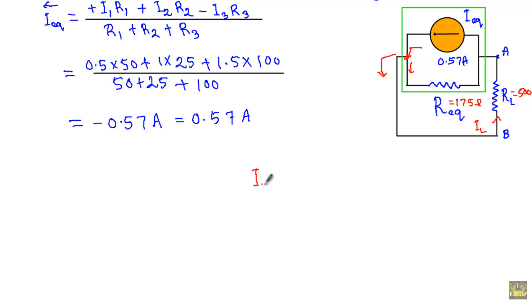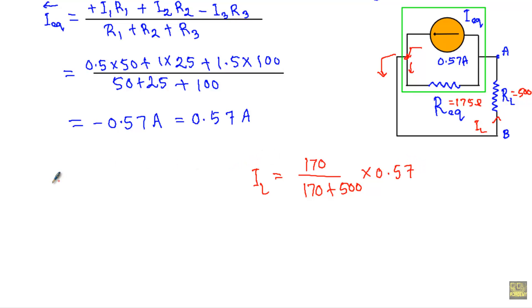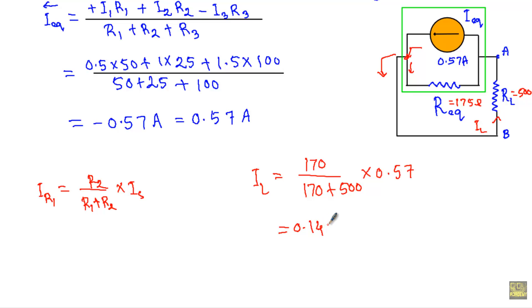Using the current divider rule: I_L equals R_equivalent divided by (R_equivalent + R_L) times I_equivalent. When two resistors are in parallel, the current through one branch uses the opposite branch's resistance divided by the total. So I_L = 175 / (175 + 500) × 0.57 = 0.1477 ampere, which is approximately 148 milliampere.